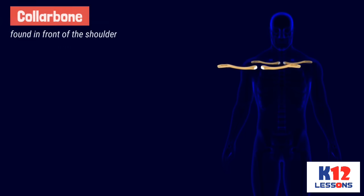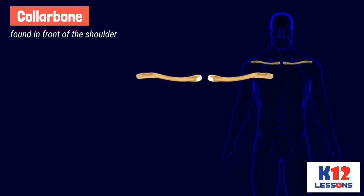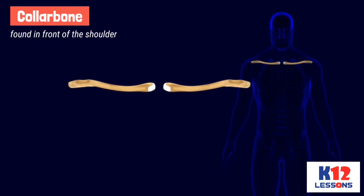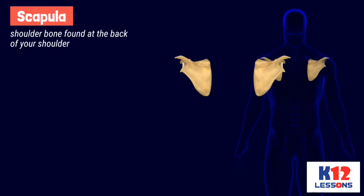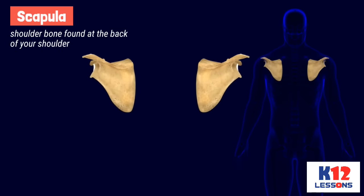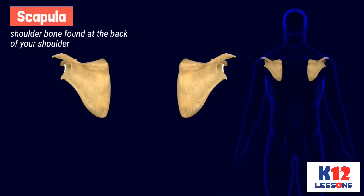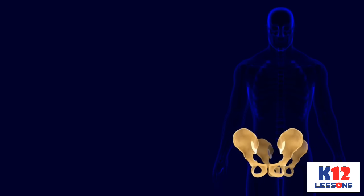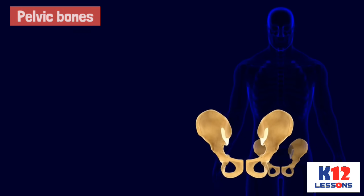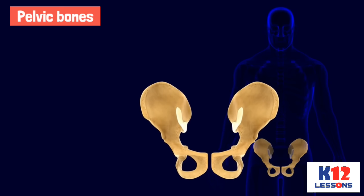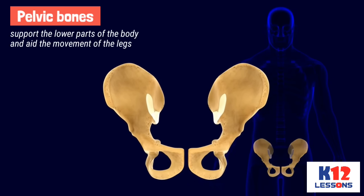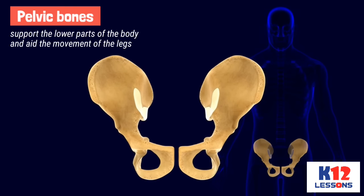The shoulder has the collar bone found in front of it. The scapula is the shoulder bone found at the back of the shoulder. The appendages found in the lower extremities are composed of pelvic bones, which support the lower parts of the body and aid the movement of the legs.